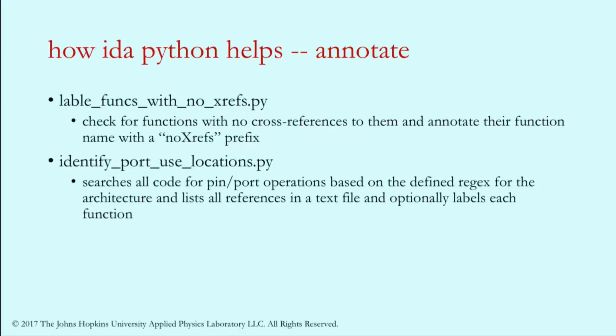This function triages all the functions that exist to find which ones have zero cross references to them. This obviously only works for architectures that don't do indirect function calls, but for those like 8051 and C166, it's extremely powerful. You find all those functions without cross references, label them, then continue down the path to find all functions that have no way to be called. You're not spending time in code that doesn't actually run.